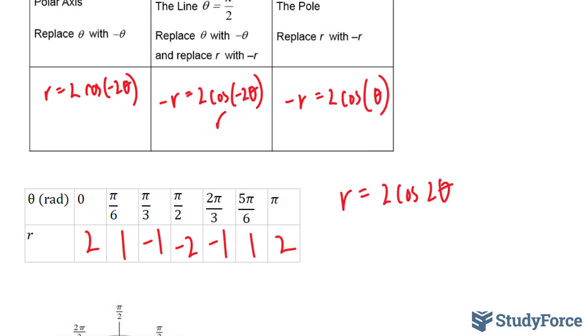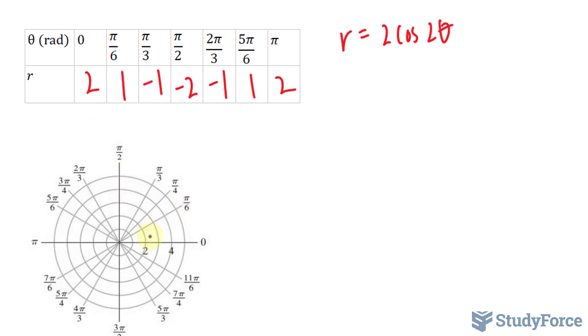Now we can go ahead and plot these points. Starting with 0 and 2, the point will be right here. Pi over 6 and 1 is right here. I'll connect these.